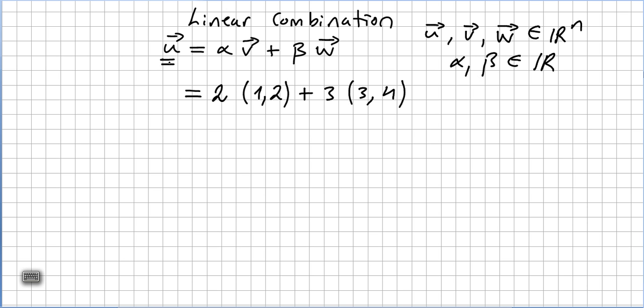We say that vector u is a linear combination of vector v and vector w if there is a given value alpha and a given value beta, that if I put alpha here and beta here, I get this vector.